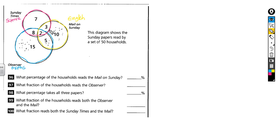There are three children standing in the overlap between science and English — they like both science and English but not maths. Then seven children who really really like science, not so keen on English or maths. And eight children who really like science and maths but are not standing inside the English circle.